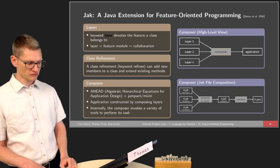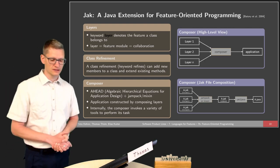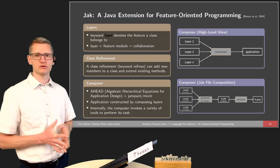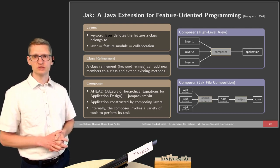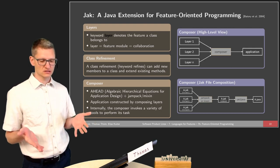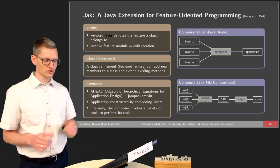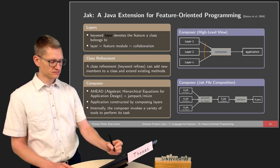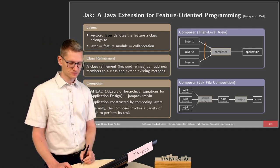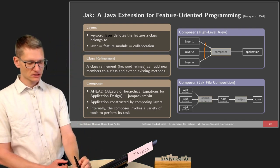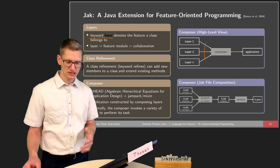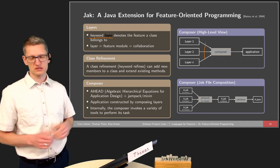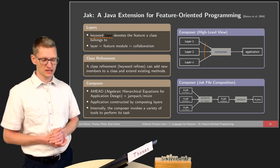We will see this through practical examples using the canonical implementation of feature-oriented programming, made available by Don Batory and others in terms of the AHEAD tool suite. This tool suite provides different options. At a high level, we have different layers or collaborations or feature modules, and these layers are composed into an application.